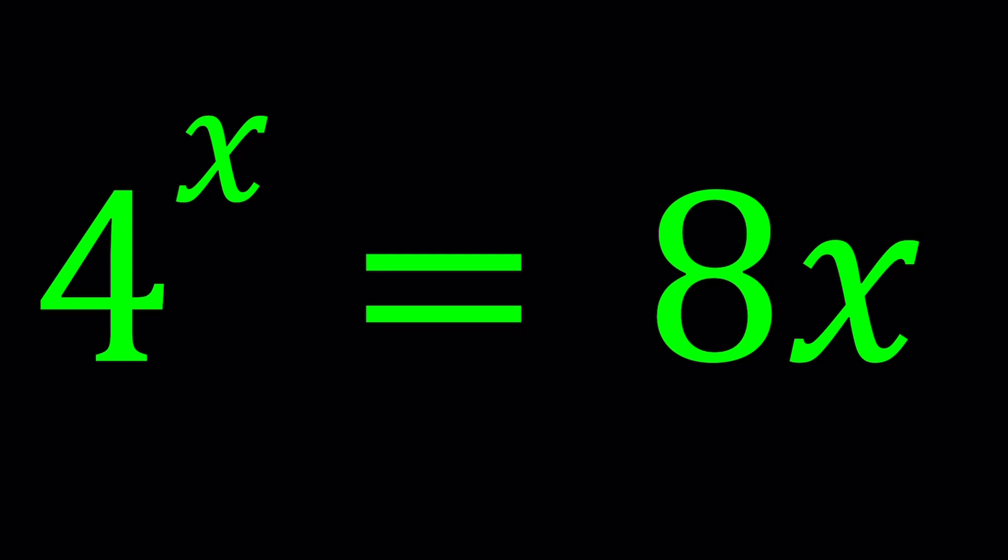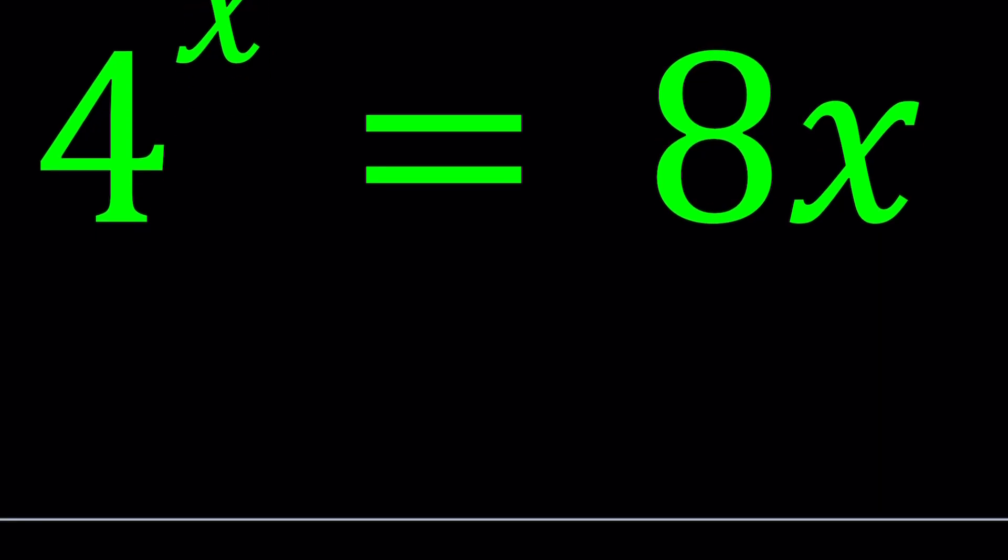But let's go ahead and see how we can solve this using a very special type of function called Lambert's W function. So here's what we're going to do first. We want to bring the x and the 4^x on the same side, and we should do it on the x side because 4^x can move easily just by changing the exponent. So I'm going to divide both sides by 4^x.